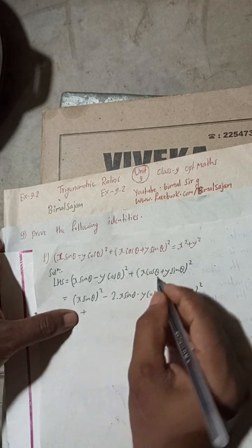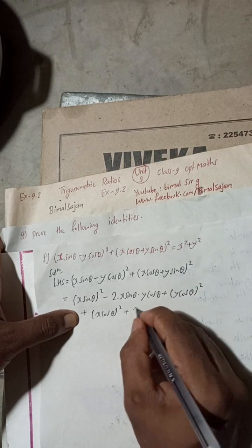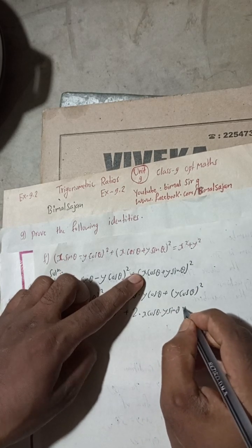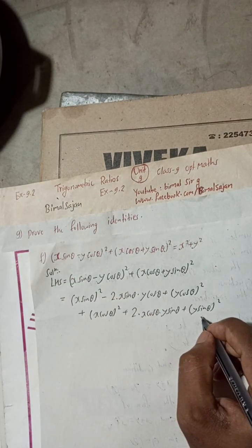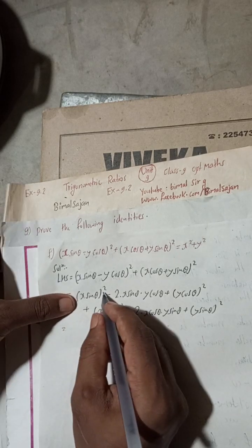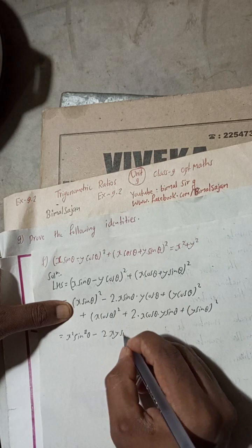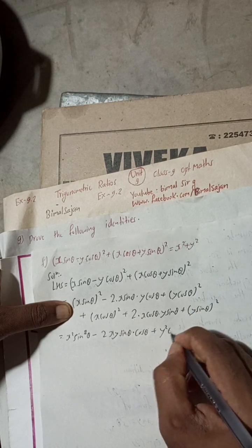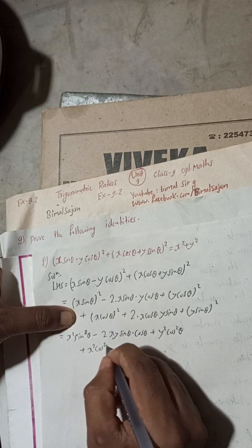Now for the second part, (x cosθ + y sinθ)², using (a + b)² formula: (x cosθ)² + 2·(x cosθ)(y sinθ) + (y sinθ)². Expanding all terms gives: x² sin²θ - 2xy sinθ cosθ + y² cos²θ + x² cos²θ + 2xy sinθ cosθ + y² sin²θ.